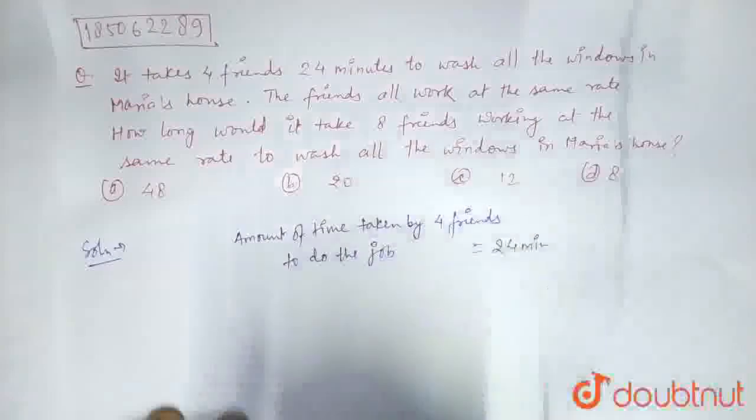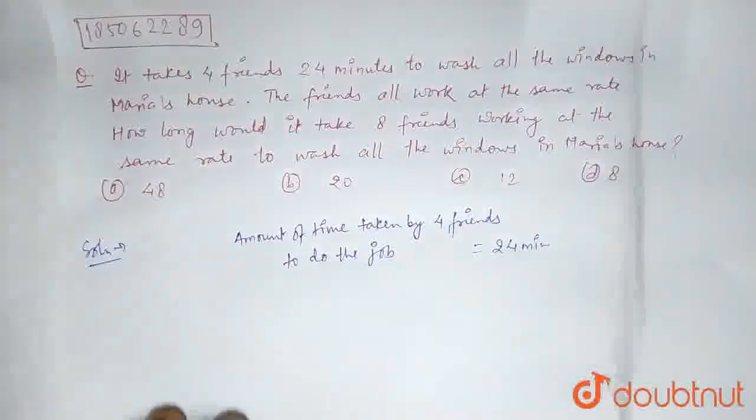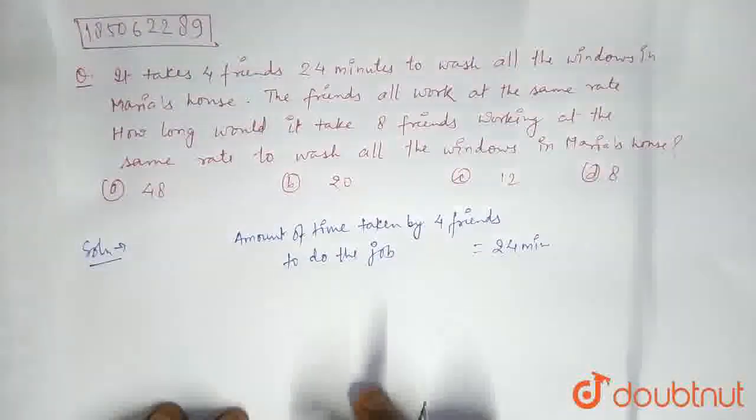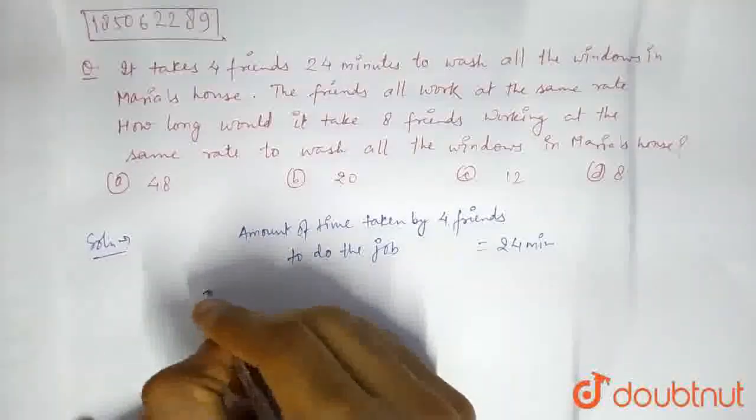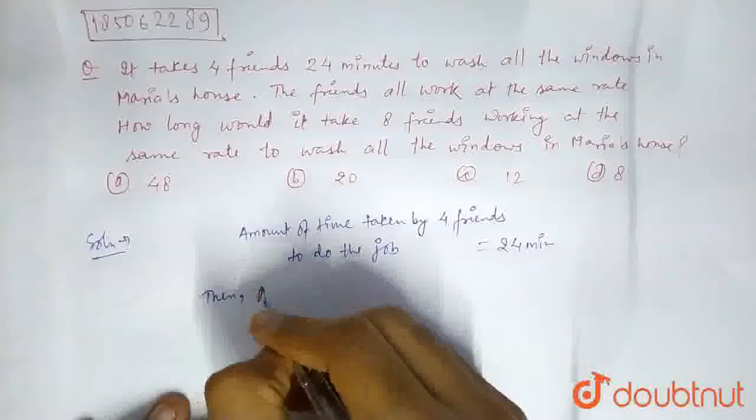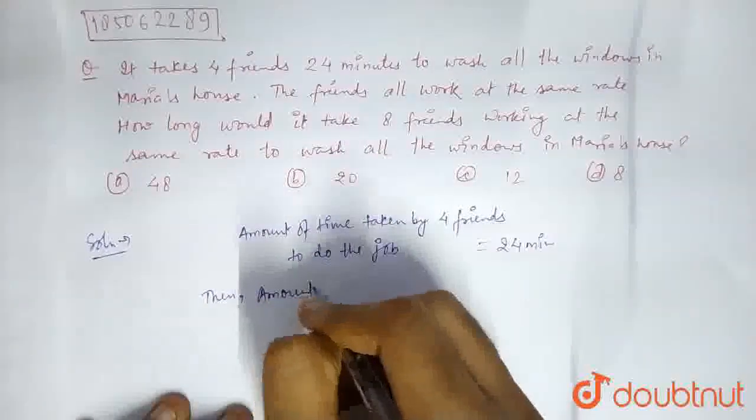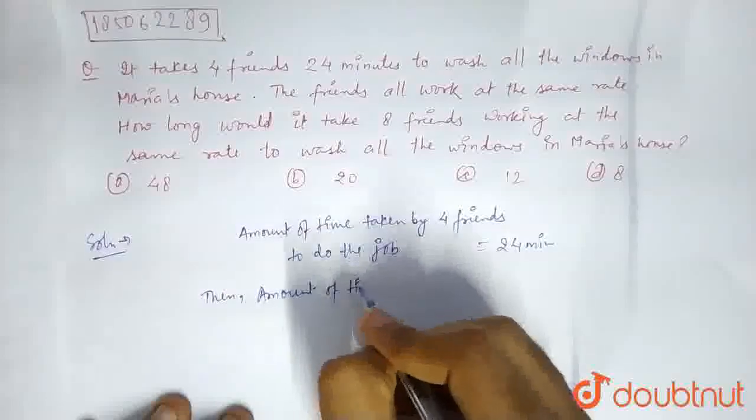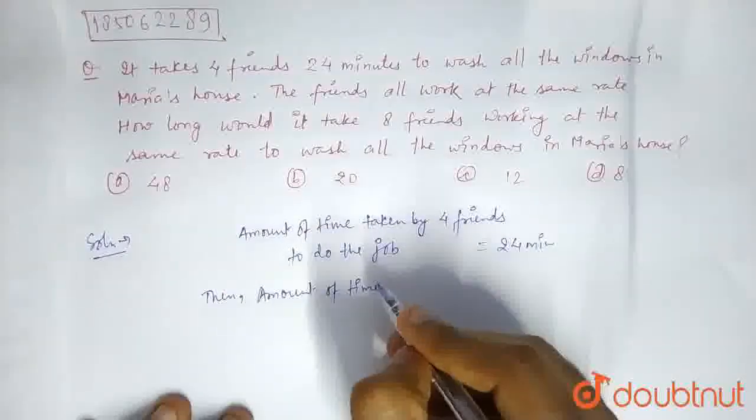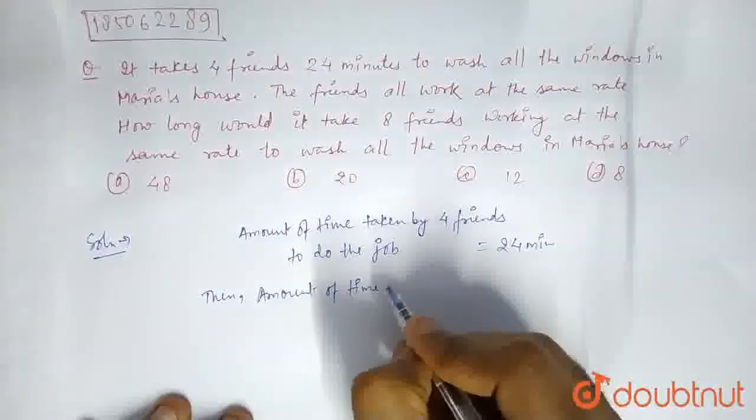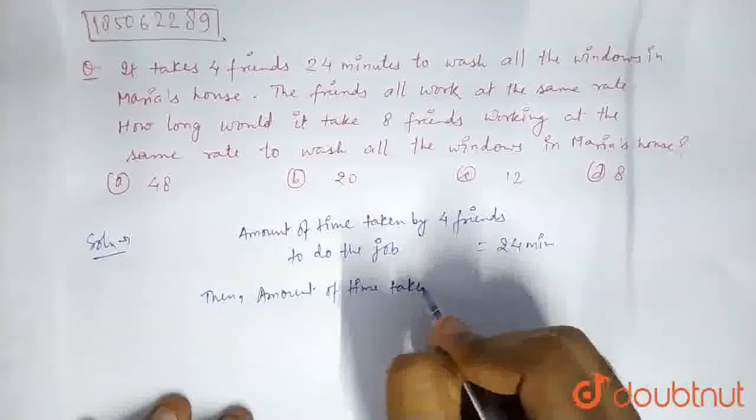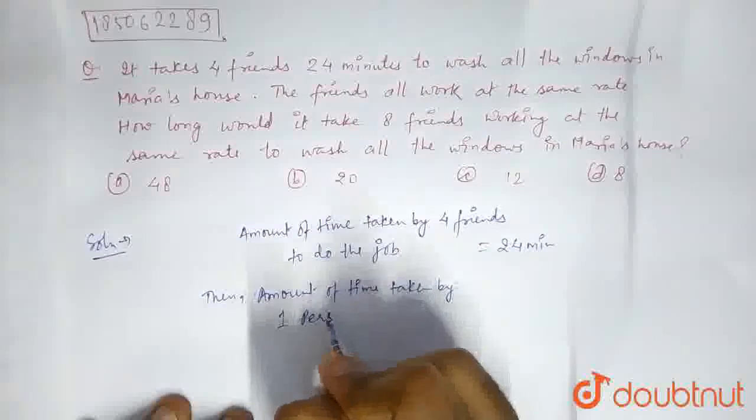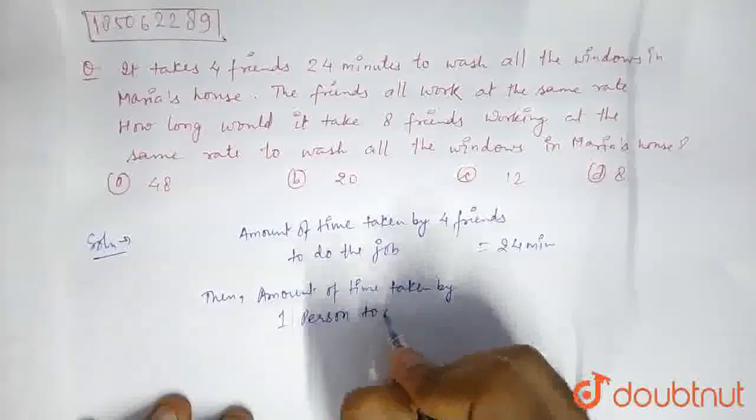Now, it's pretty obvious that if 4 friends are taking 24 minutes to complete a job, then the amount of time—I'm going with amount of time—amount of time taken by 1 person to do the job.